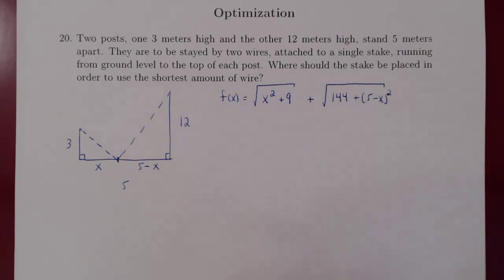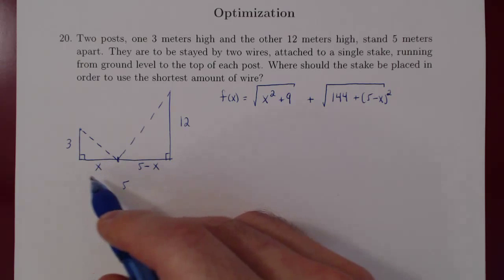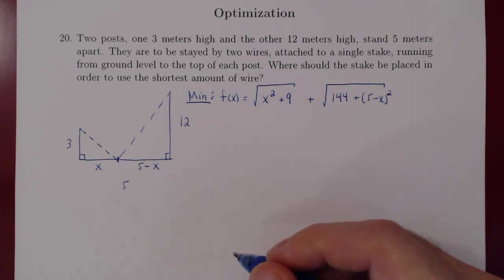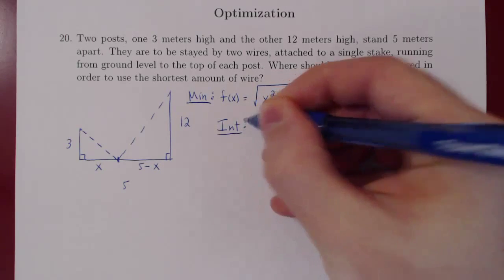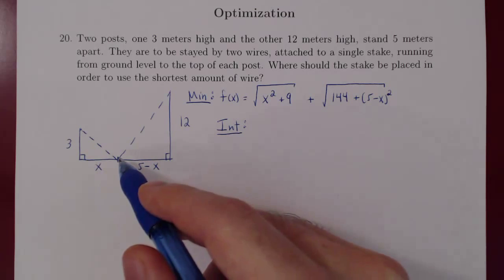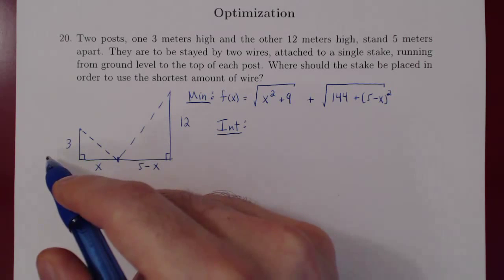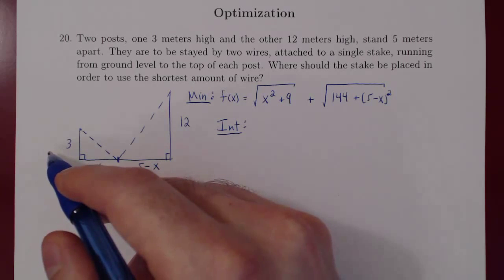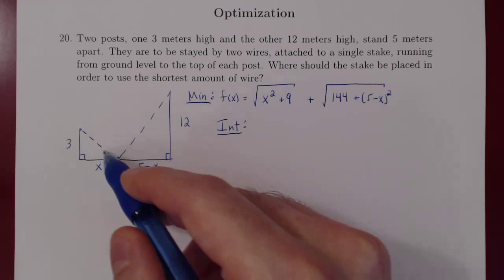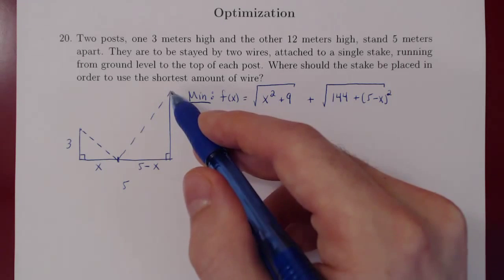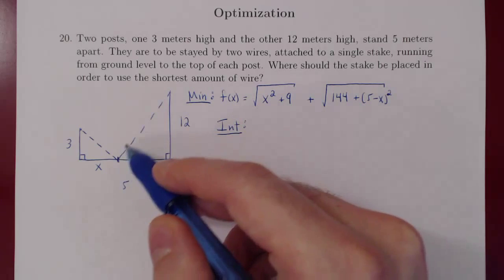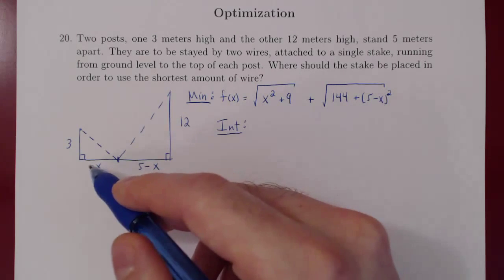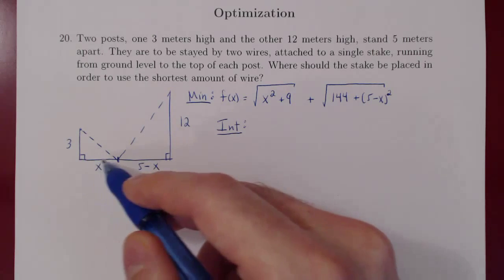What is the possible range of x values? Our goal is to minimize this function of x. Could x be negative? If x were negative, you get the exact same triangle for the first wire, so the length of the first piece of wire is the same. But the length of the second wire will be much longer. So clearly, we will not obtain a minimum amount of wire if we allow x to be negative.